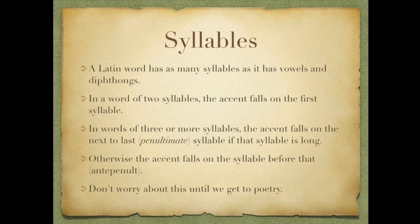Latin deals with syllables in a very easy way — since every letter is always pronounced, there are no silent letters. A Latin word has as many syllables as it has vowels and diphthongs. In a word of two syllables, the accent falls on the first syllable. In words of three or more syllables, the accent falls on the next to last syllable — the penultimate syllable — if that syllable is long. Otherwise it falls on the syllable before that, the antepenult.